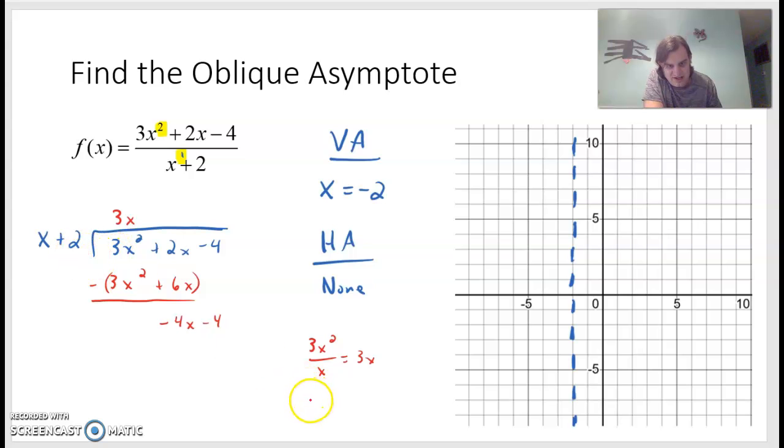So then I'll have negative 4x divided by x. This leading term right here divided by the x. That will reduce down to negative 4. So I'll go in negative 4 times. So negative 4 times x would be negative 4x. Negative 4 times 2 would be negative 8. When I subtract, I'm down to 4, which x will not go into 4 evenly.